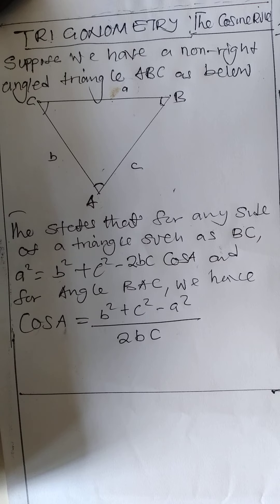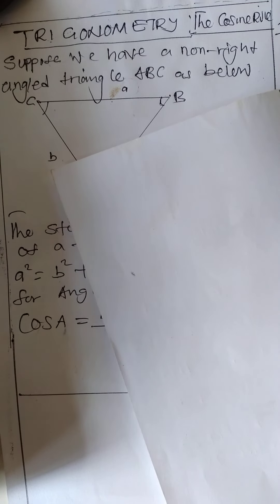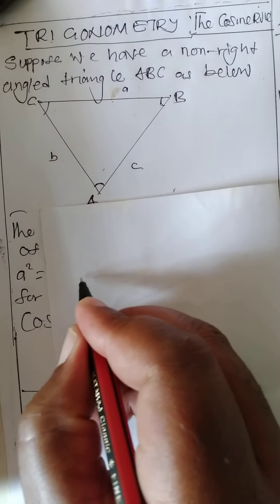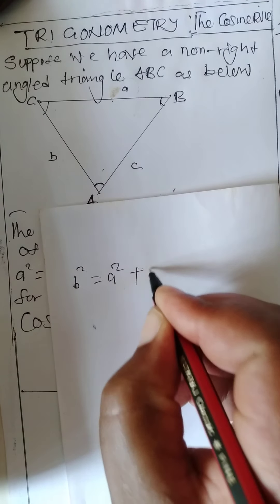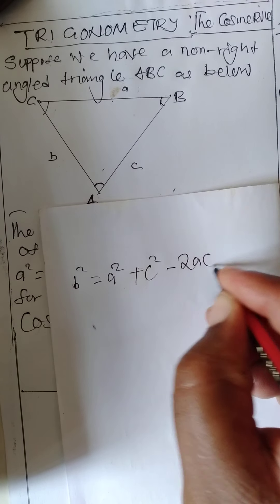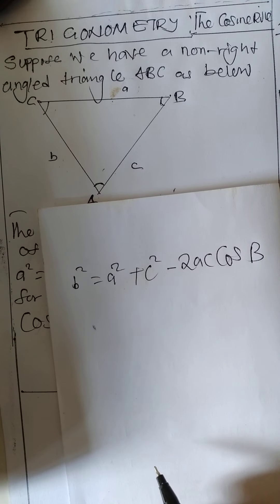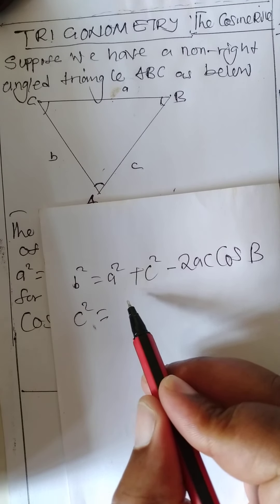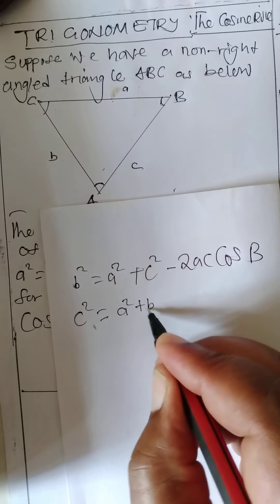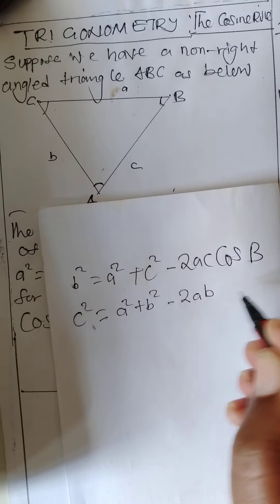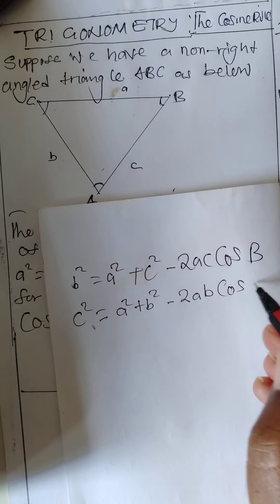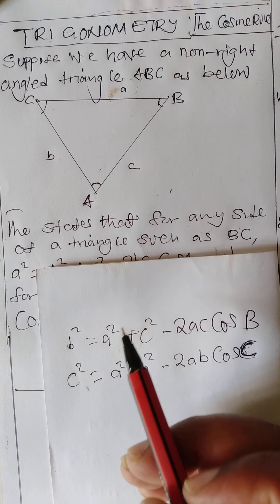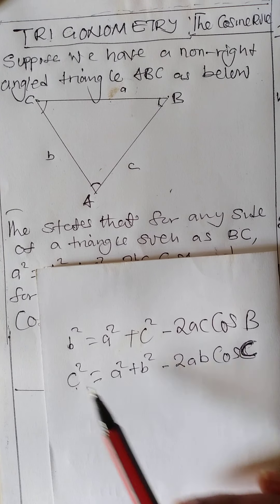If you want to find side b, the procedure is the same: b squared equals a squared plus c squared minus two ac cos B. And if you want to find c, you say c squared equals a squared plus b squared minus two ab cos C. That is how you find each side using the cosine rule.